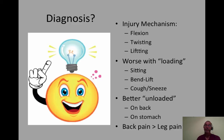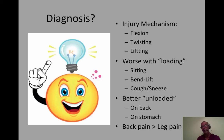In diagnosing disc injuries, I look first to the mechanism of involvement, which usually involves flexion, lifting, and twisting. Symptoms are typically much worse when the spine is under loaded conditions, and I like to see a 50% improvement in symptoms when the spine is unloaded, such as when someone lays on their back or stomach. Back pain is usually equal to or much greater than leg pain, and if there is pain in the legs, it rarely goes below the knee.